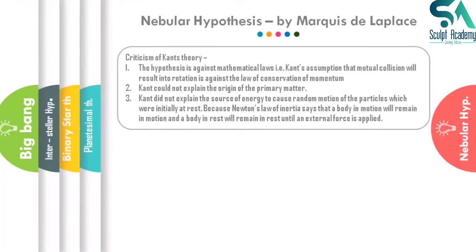Now, what were the failures of Kant's theory? First, this hypothesis is against mathematical law — specifically the law of conservation of momentum, which we studied in Class 9 physics. Kant assumed that mutual collision would result in rotation, but when two bodies moving in a straight line collide, the resulting movement remains in a straight line; it does not change direction into rotation.